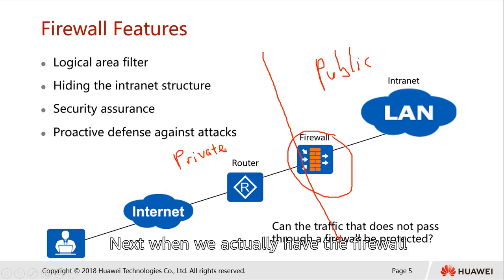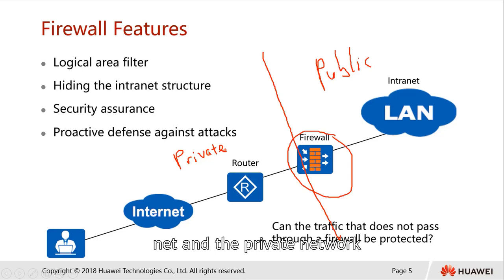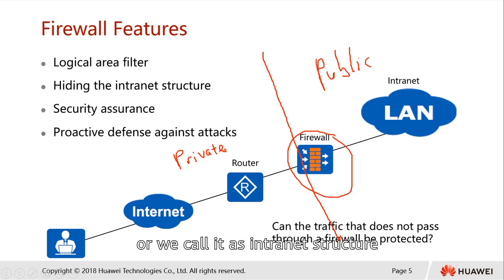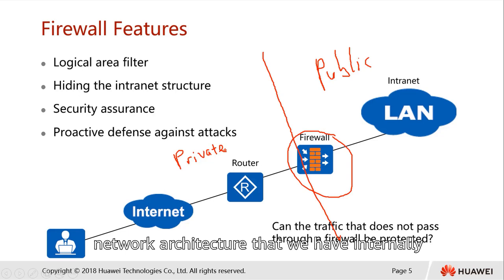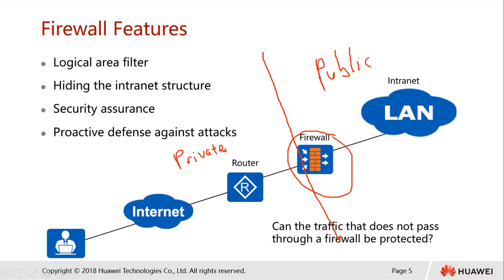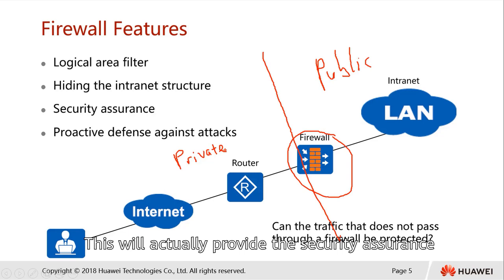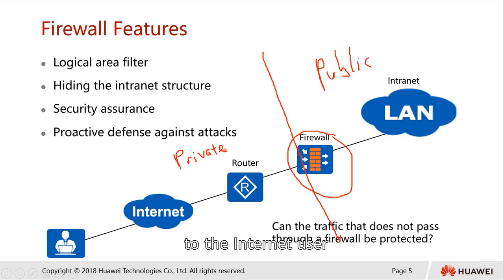When the firewall acts as a filter between the extranet and the private network, the internal network structure — or intranet structure — will be hidden behind the firewall. For example, nobody from outside the network is able to determine the network architecture that we have internally. This provides a security assurance to the internal user.